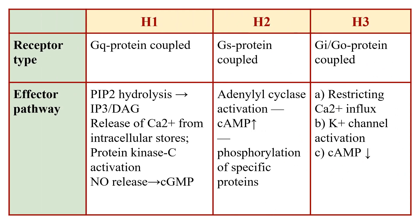H1 receptor is coupled to Gq protein, H2 receptor is coupled to Gs protein, and H3 receptor is coupled to Gi and Go protein. H4 receptors are very similar to H3 receptors in structure and effector pathway. Activation of H1 receptor stimulates the calcium mobilizing pathway: phosphatidylinositol bisphosphate is hydrolyzed to inositol triphosphate, which releases intracellular calcium, causing phosphokinase C activation and nitric oxide release.